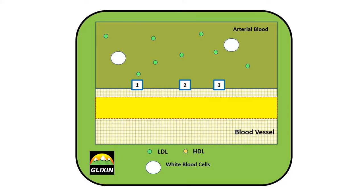For healthy folks, this isn't a problem. High density lipoproteins or HDL can actually bind to this LDL, take them back out into the bloodstream where they get recycled by your liver. For healthy folks, they have no buildup of plaque in their arterial walls. That means their blood vessels are wide open — blood flows through easily, with no risk of heart failure or stroke.